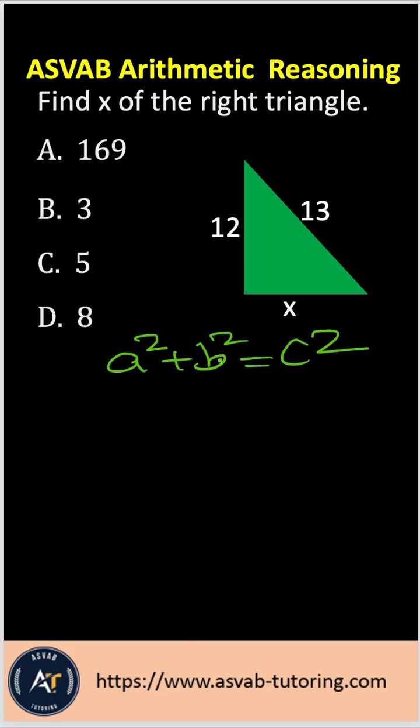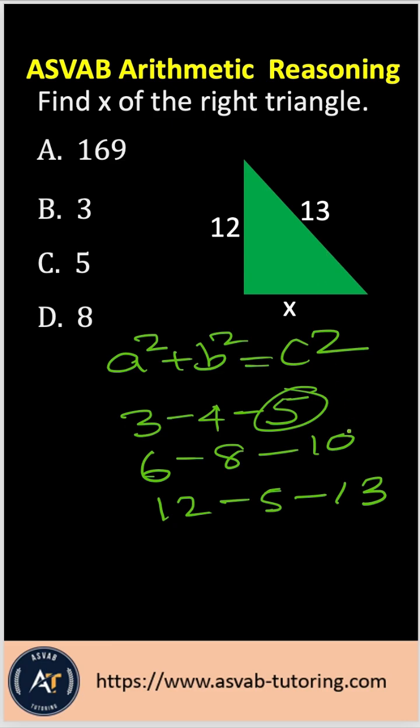From my experience, there are mainly three types of Pythagorean theorem related questions you might see on the actual test. Those are three-four-five triangle, six-eight-ten triangle, or twelve-five-thirteen triangle, where the last number is the hypotenuse.